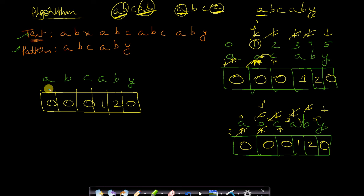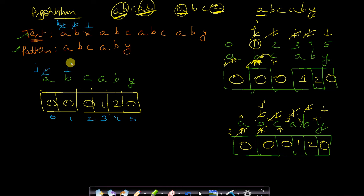Now let's use the LPS array to search the text. Text pointer is i, pattern pointer is j. 'a' matches 'a' — update both. 'b' matches — update. Now x and c don't match. We look at LPS[previous index of c] = LPS[1] = 0, move to index 0. 'a' is compared with x — not equal. Since 'a' is the first element, we just advance the text pointer i.